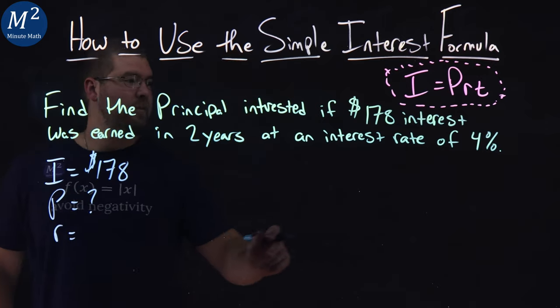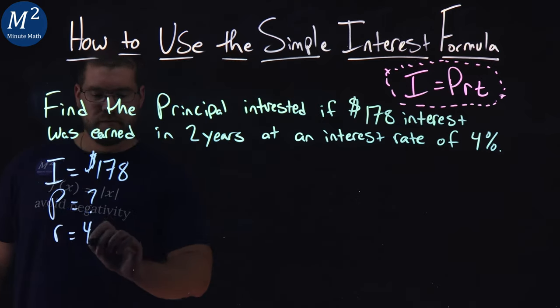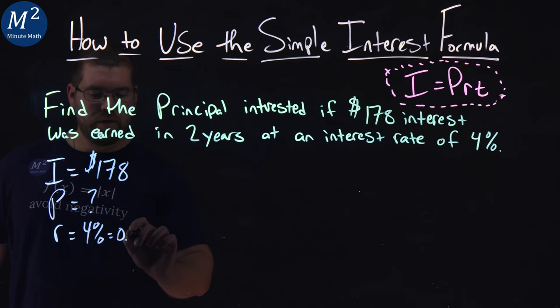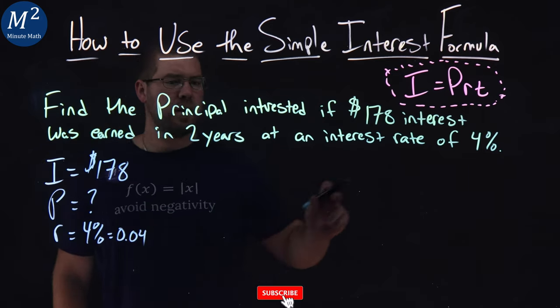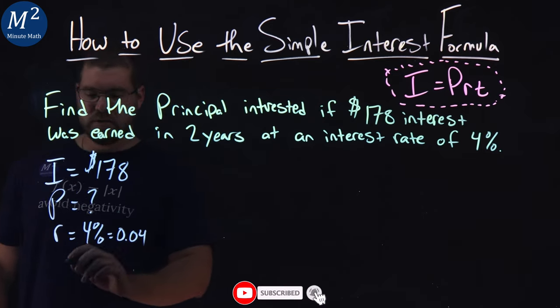Our rate they gave us here was 4%, or 0.04 as a decimal. And our time, T, is two years.